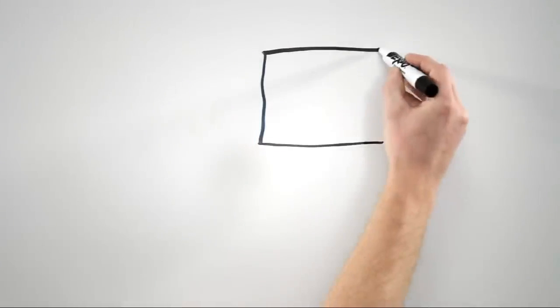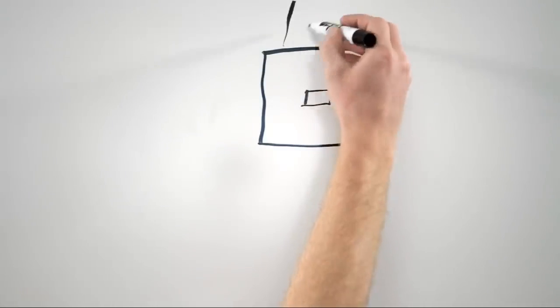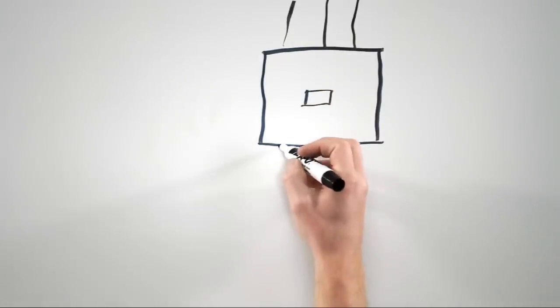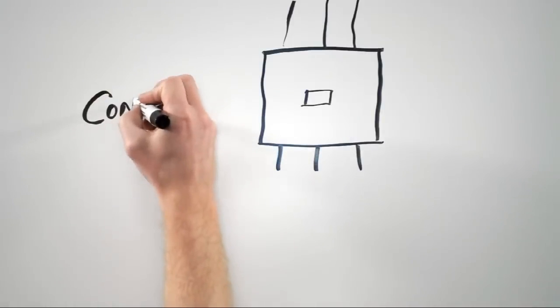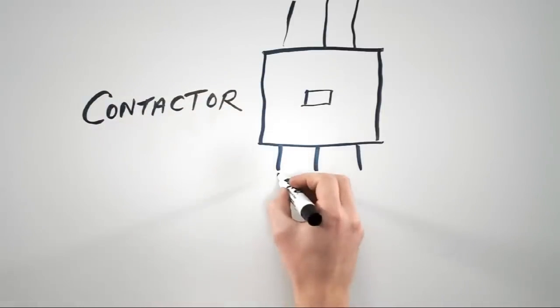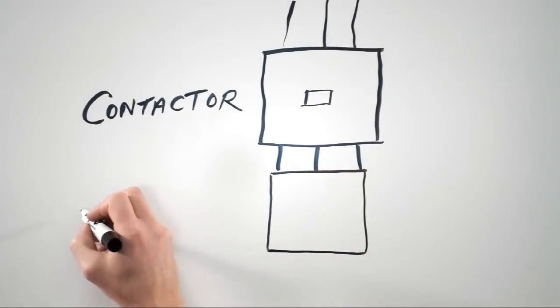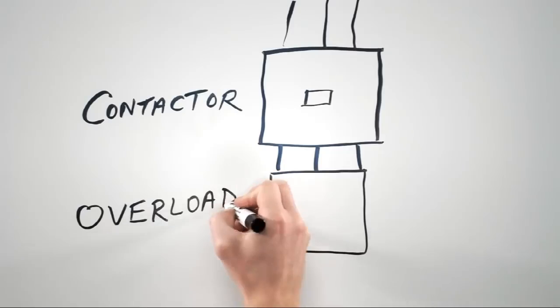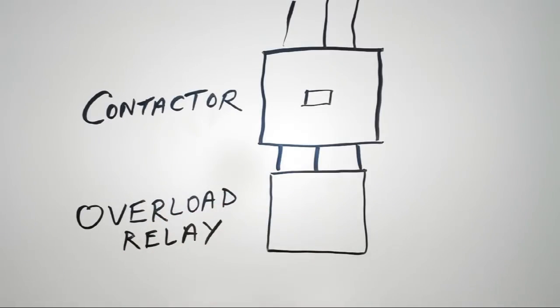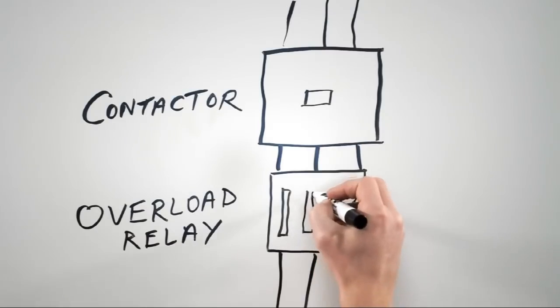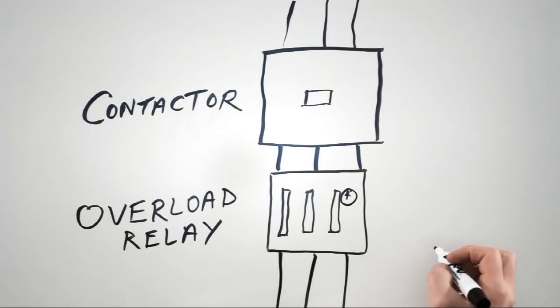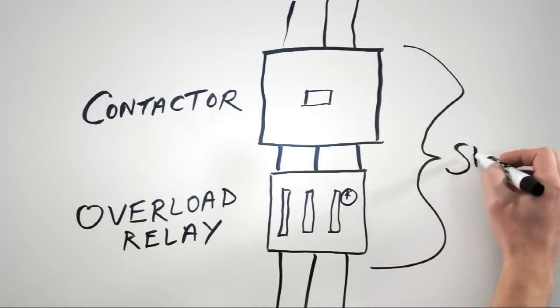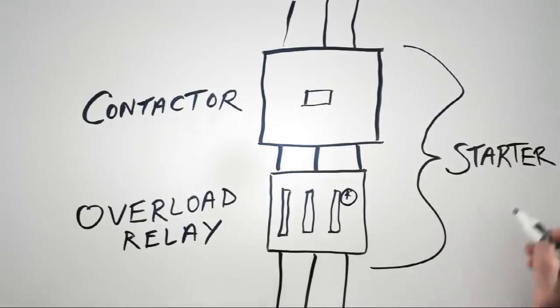So, if we get rid of the over current protection provided by the molded case breaker, we still need to find a way to protect the motor from an overload condition. Here we've got a contactor with our power coming in the top and out the bottom. But now let's add a new component to the contactor. This is called an Overload Relay. The Overload Relay has three bimetal strips inside, that are designed to heat up at the same rate as the windings of the motor. This is different from the bimetals inside the breaker, because those bimetals didn't know to ignore the inrush when you start the motor. When you pair an Overload Relay with a contactor, we call this a starter.